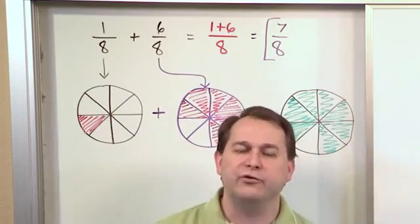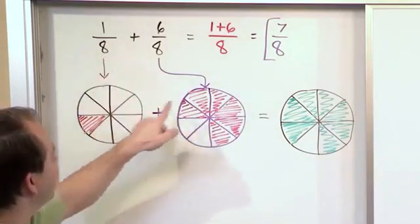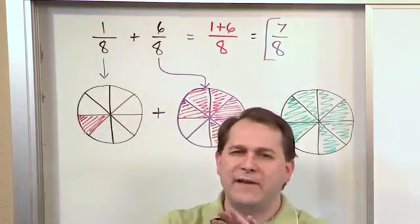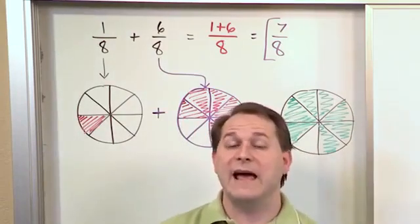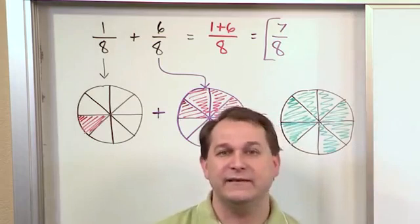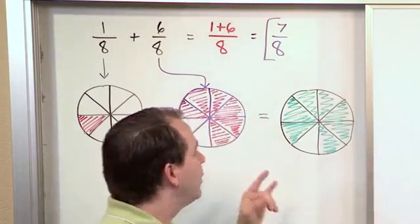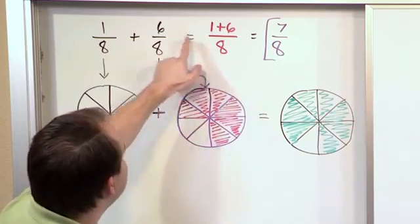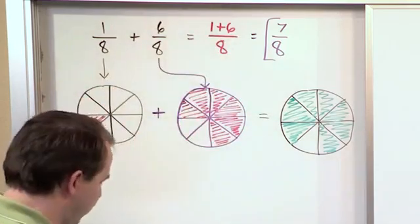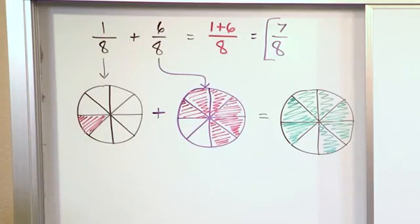And it also shows you why the denominators have to be the same before you can add fractions, because you have to have a common framework between the two fractions. In this case, it's how many pieces that pizza's cut up into. So whenever we add fractions, we need to have the same denominator, we carry it over, and then we simply add the numerators and that's what we're basically doing here.